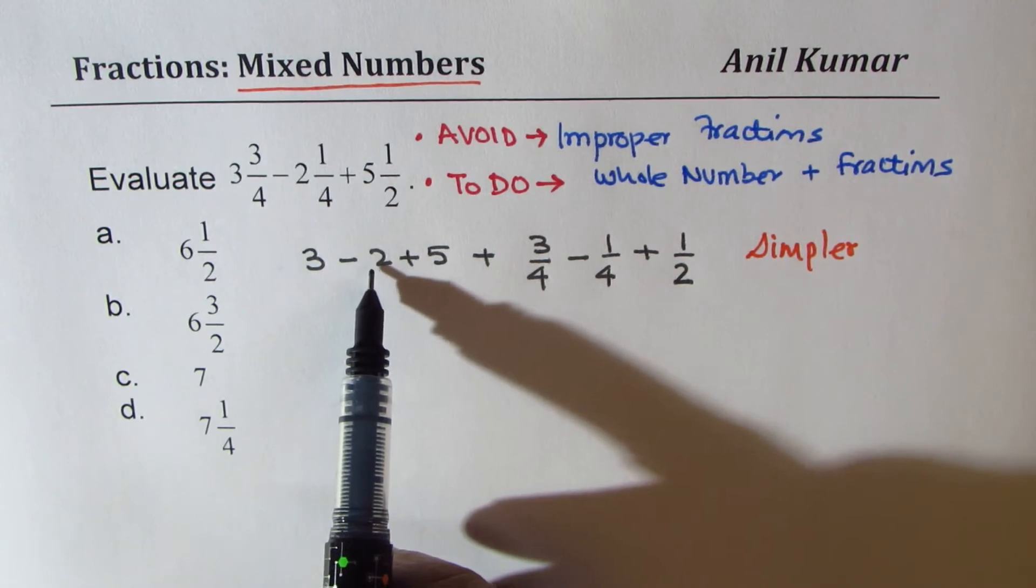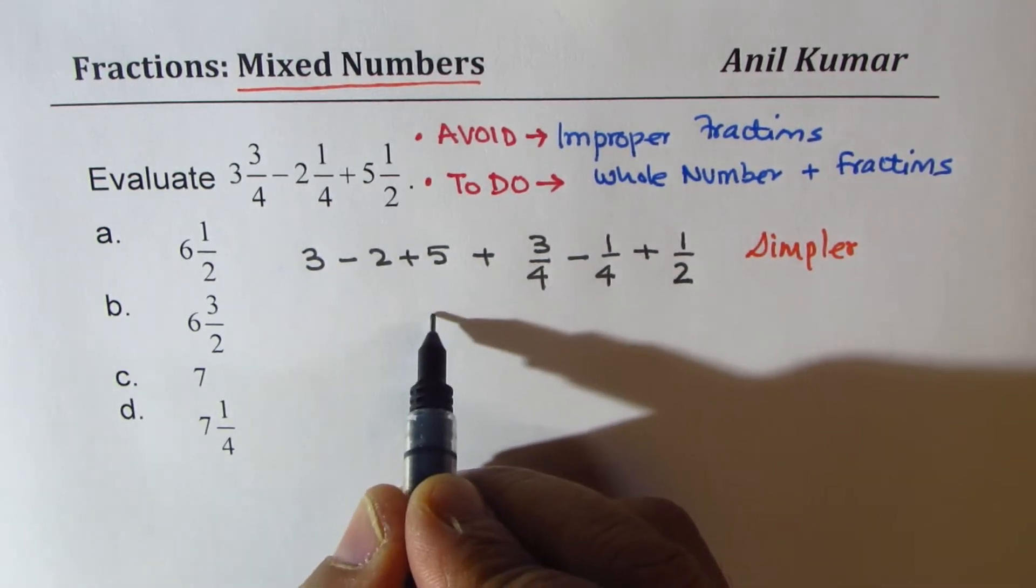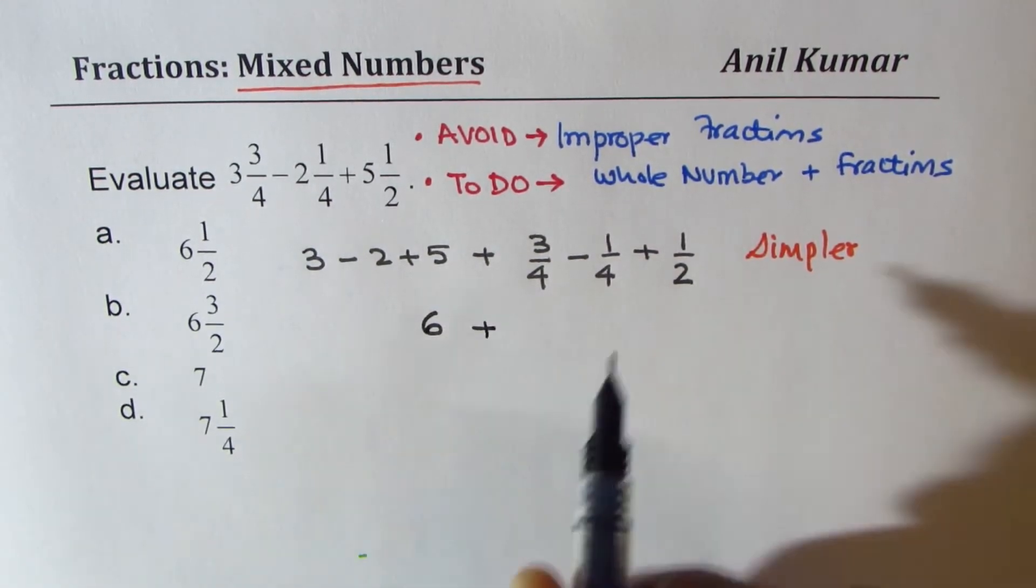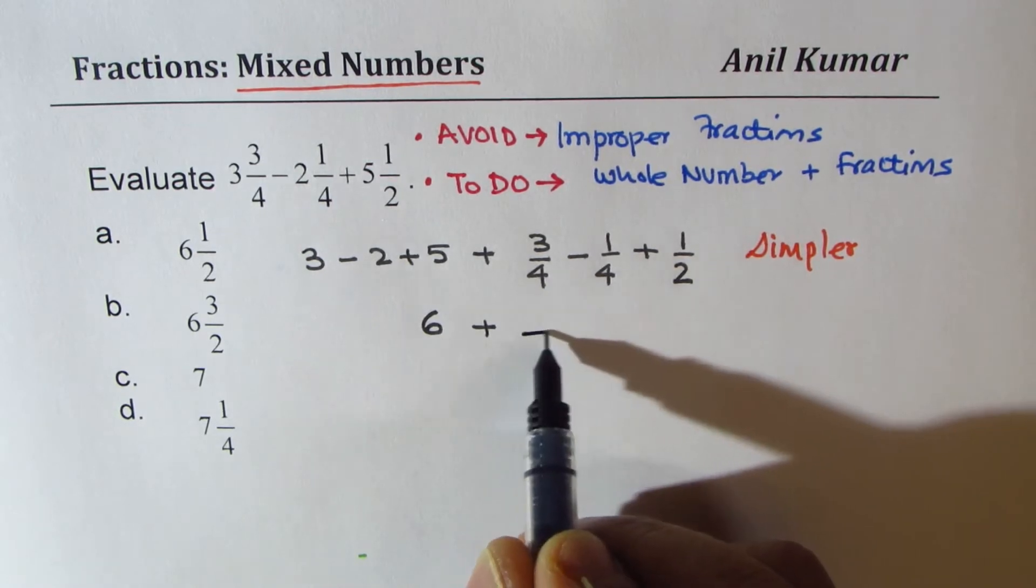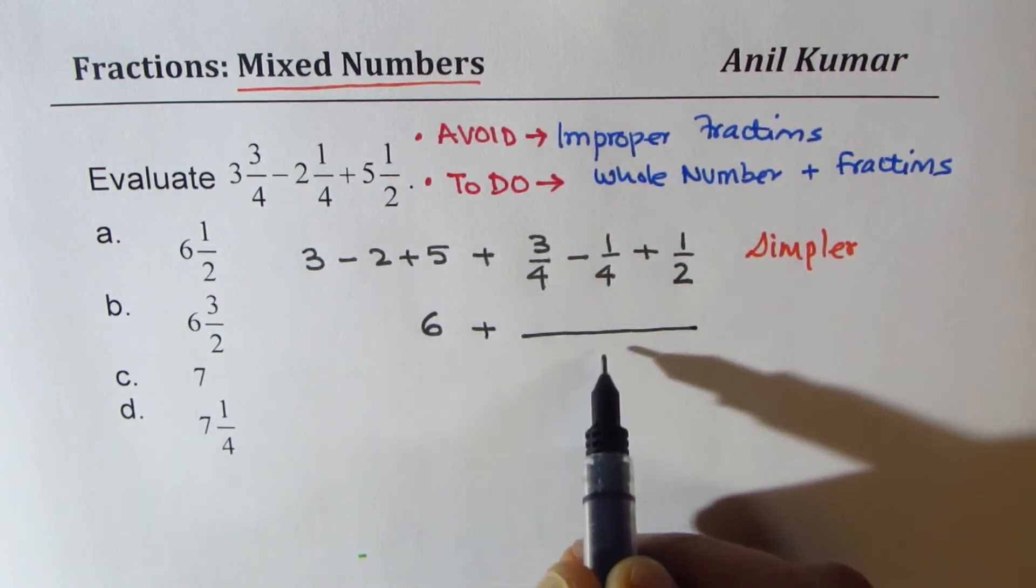You can do this, which is 3 minus 2 is 1 plus 5 is 6. So we write 6 here.